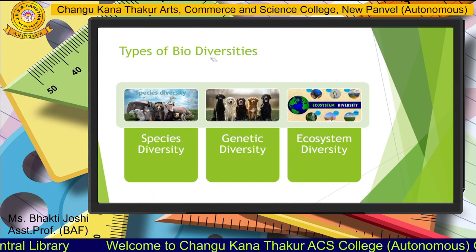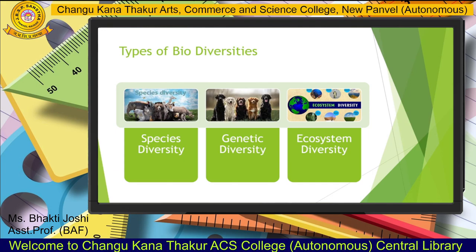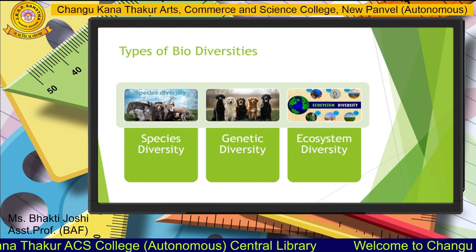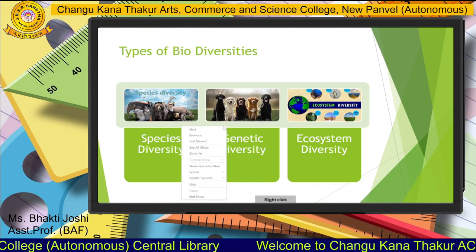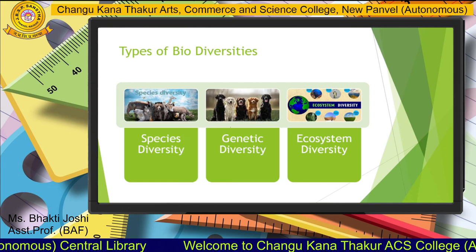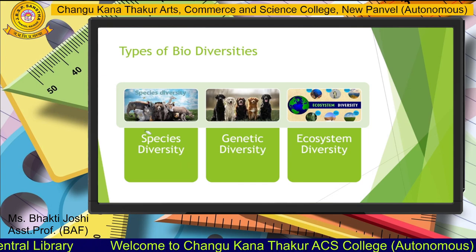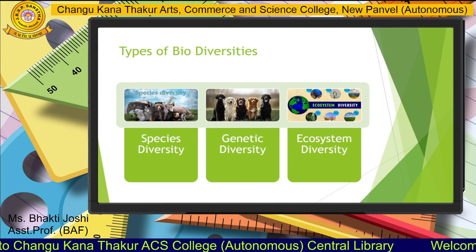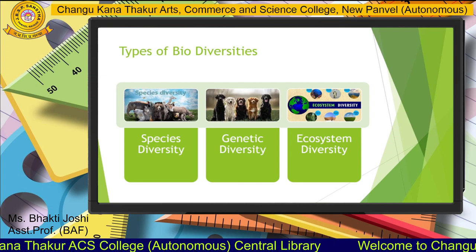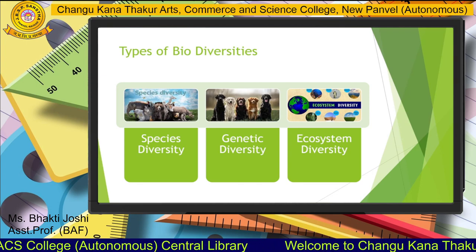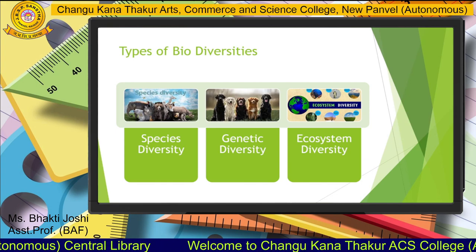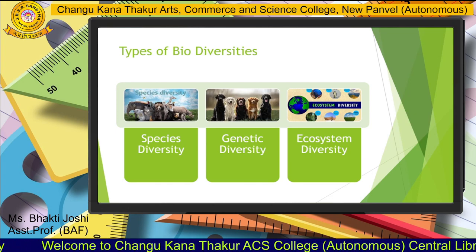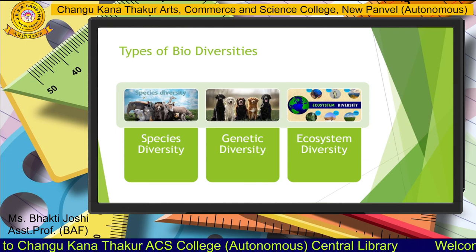Types of biodiversity are categorized into three: first is species diversity, second is genetic diversity, and third is ecosystem diversity. Species diversity denotes the variety of living species in a defined geographical area. To understand biodiversity, we commonly count species, genes, or ecosystems. In species diversity we include types of birds, mammals, reptiles, frogs, and similar species.